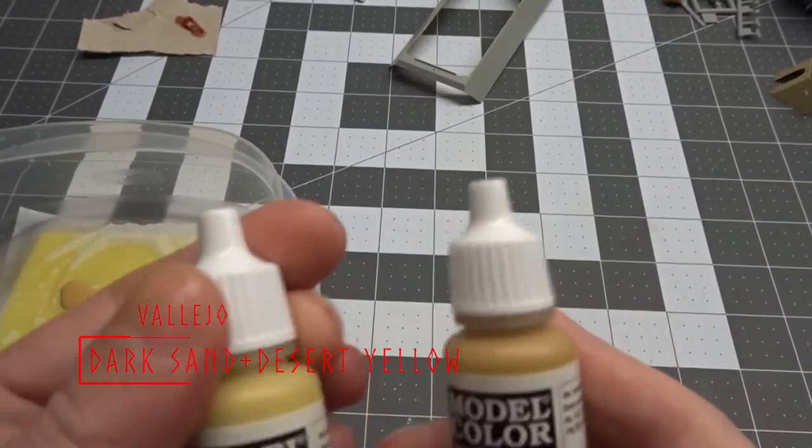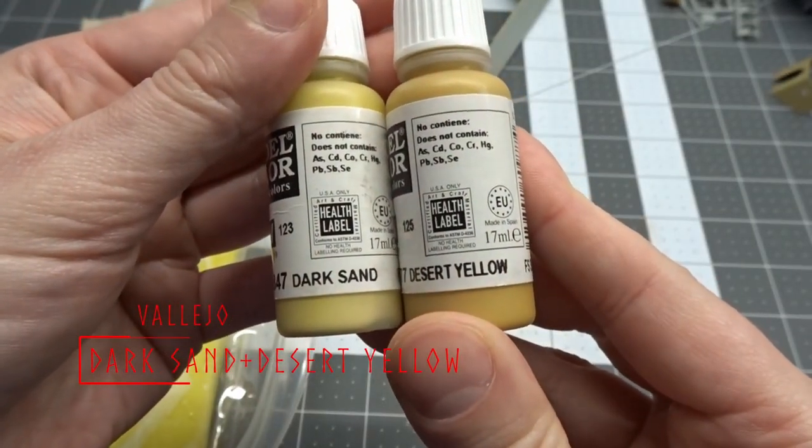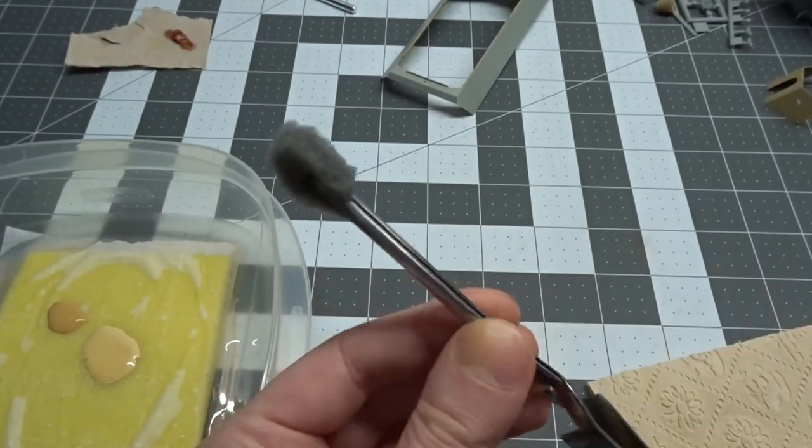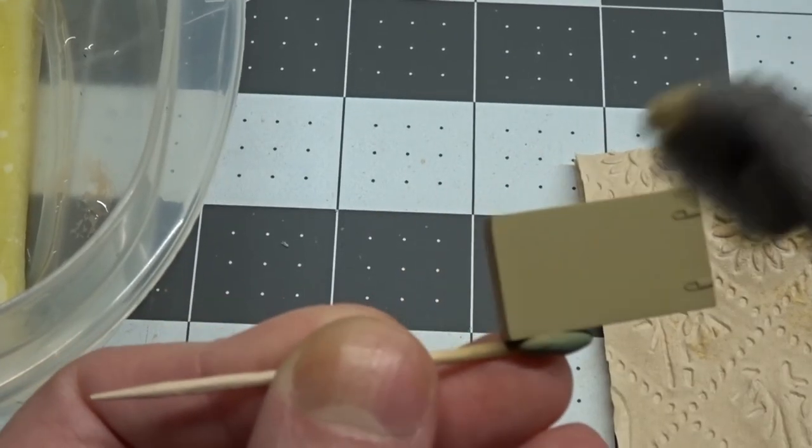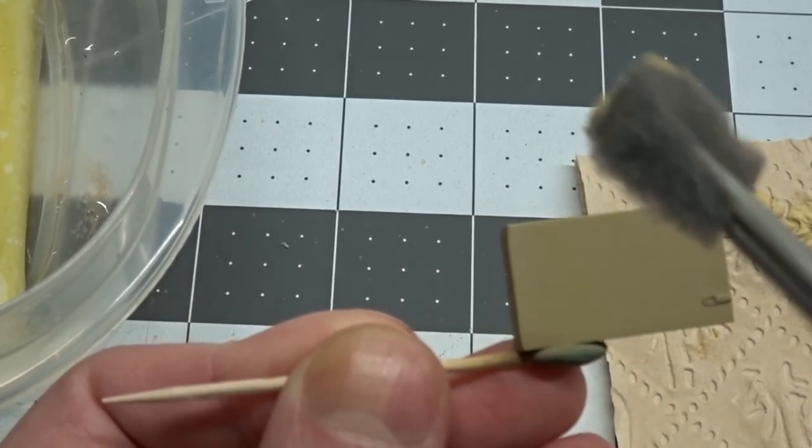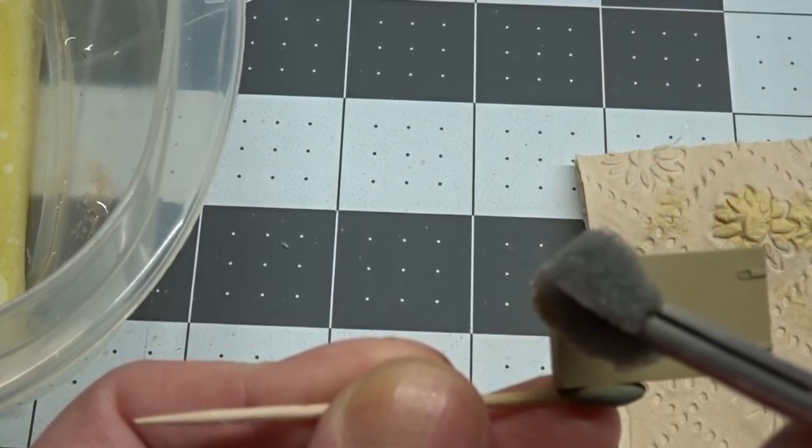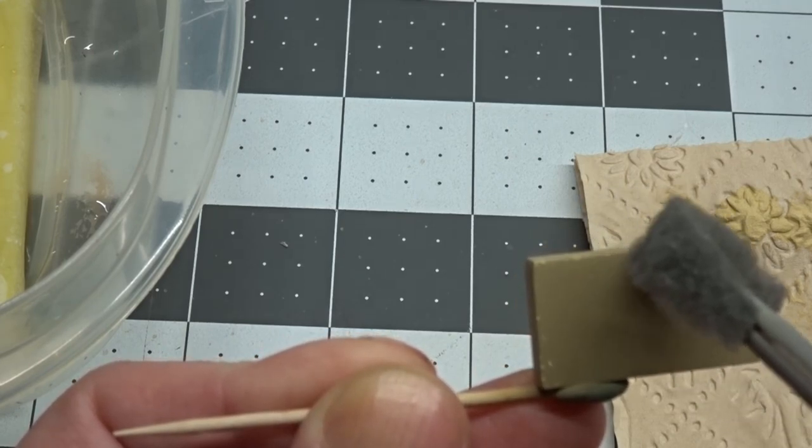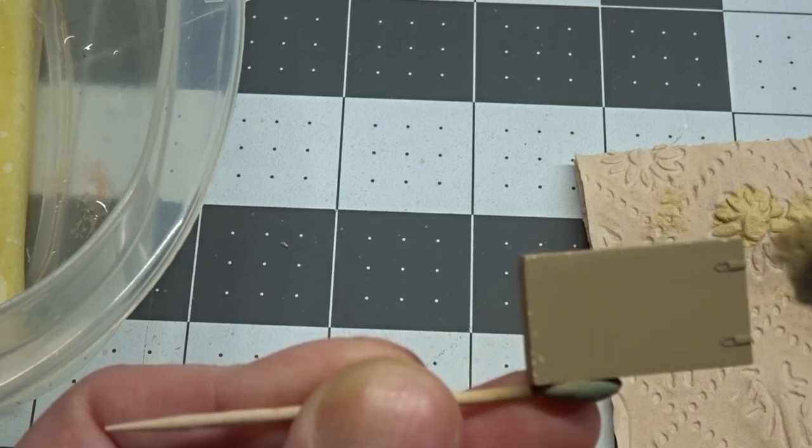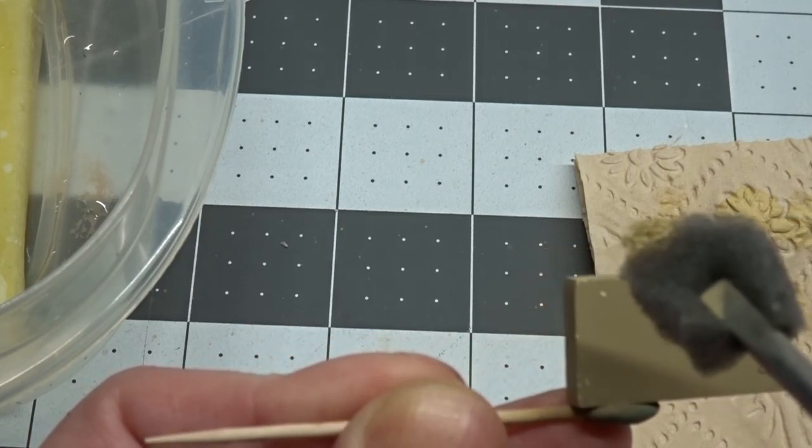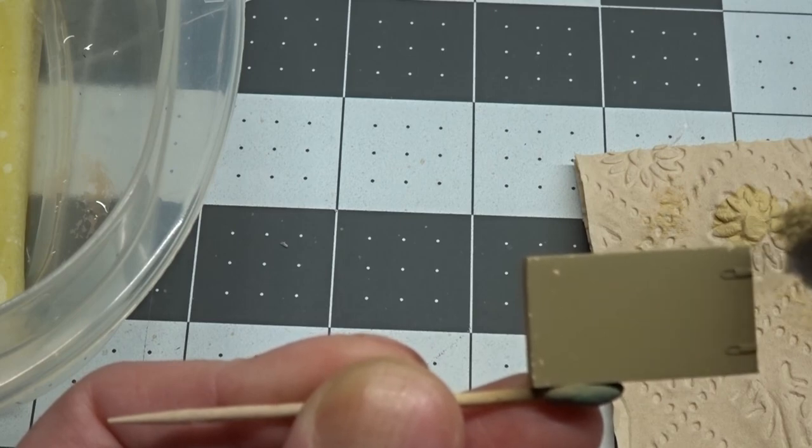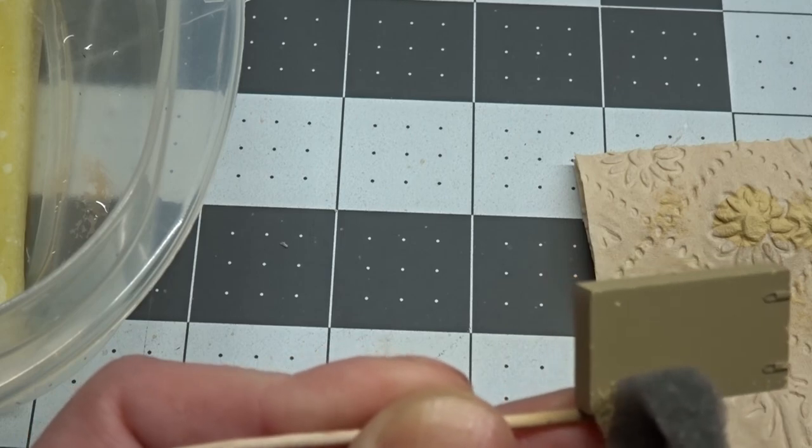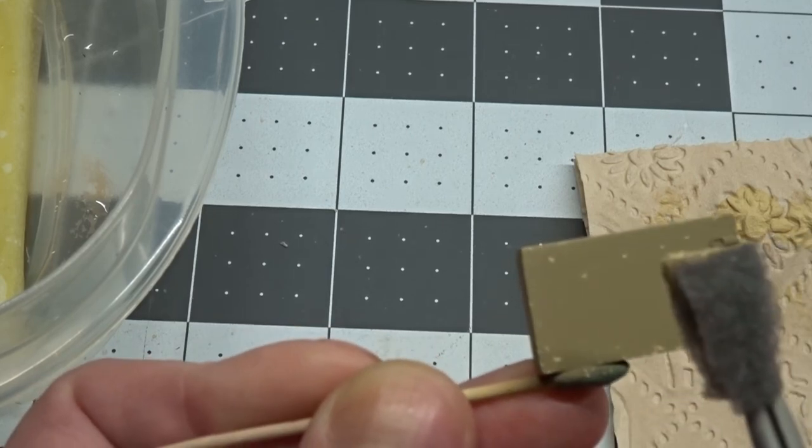Now on to light chipping using a mix of Vallejo Dark Sand and Desert Yellow. For chipping, I put a piece of packing foam into a pair of locking tweezers. To sponge chip, just dip the sponge into the paint and remove most of it onto a paper towel. Then lightly tap the surface of the part you want to chip. I start around the edges and the high spots first, then add some spots to the center of the piece.